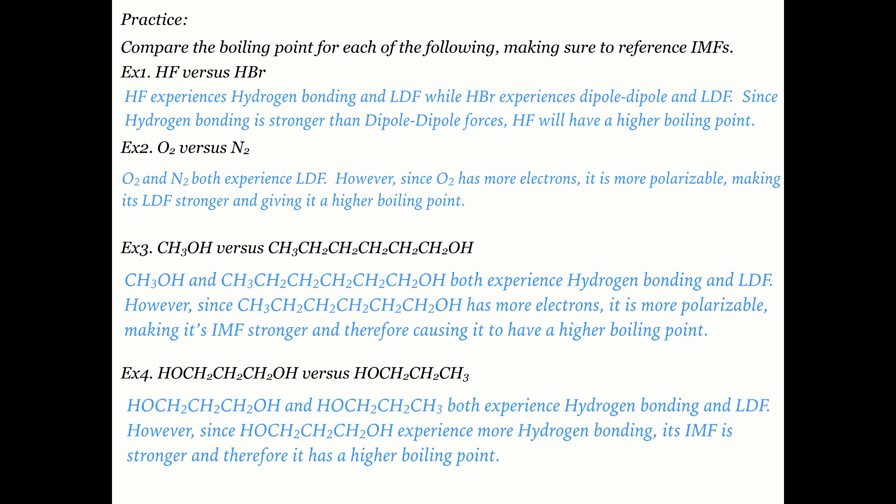To summarize: LDF tends to be weaker than dipole-dipole, which is weaker than hydrogen bonding. However, if two molecules share the same type of intermolecular attraction, compare size and number of electrons — larger means stronger LDF. If both have hydrogen bonding, check whether one can form more hydrogen bonds than the other. Use these rules to complete your practice problems and confirm your understanding.